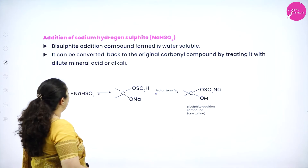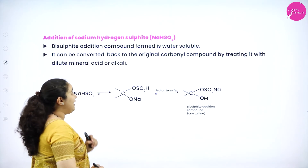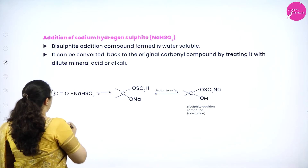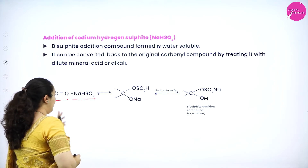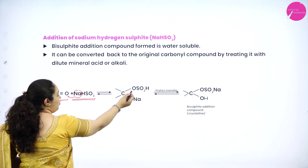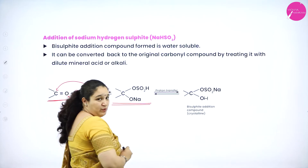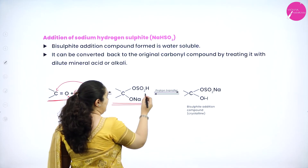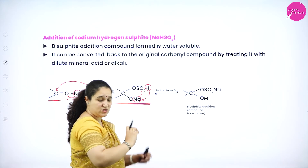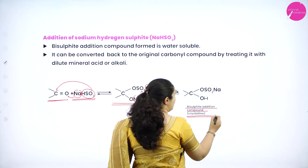Next we have addition of sodium hydrogen sulfite (sodium bisulfite). The bisulfite addition compound is water soluble. In the reaction, sodium bisulfite is added to the carbonyl group: sodium gets added to oxygen and the –OSO2H group gets added to the carbon atom, forming an intermediate. There is then a proton transfer — the hydrogen moves to oxygen and the Na group moves to that oxygen — giving the bisulfite addition compound, which is a crystalline solid.